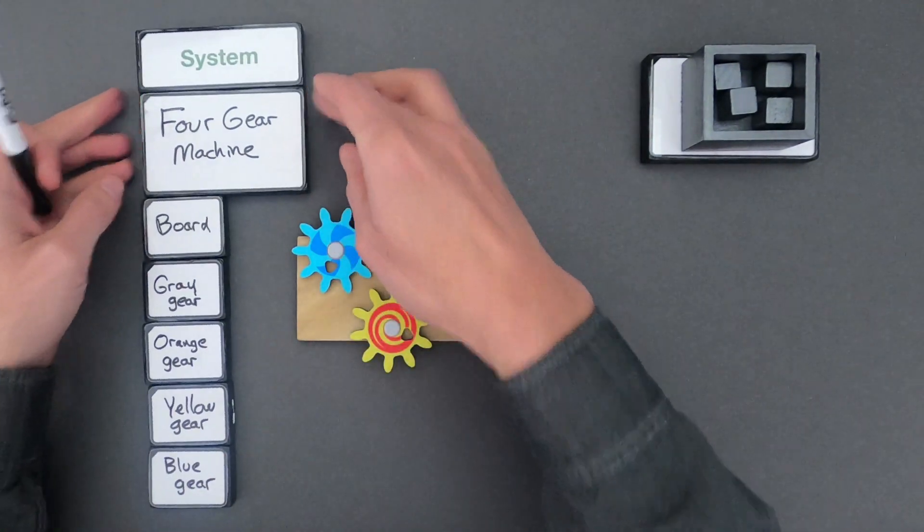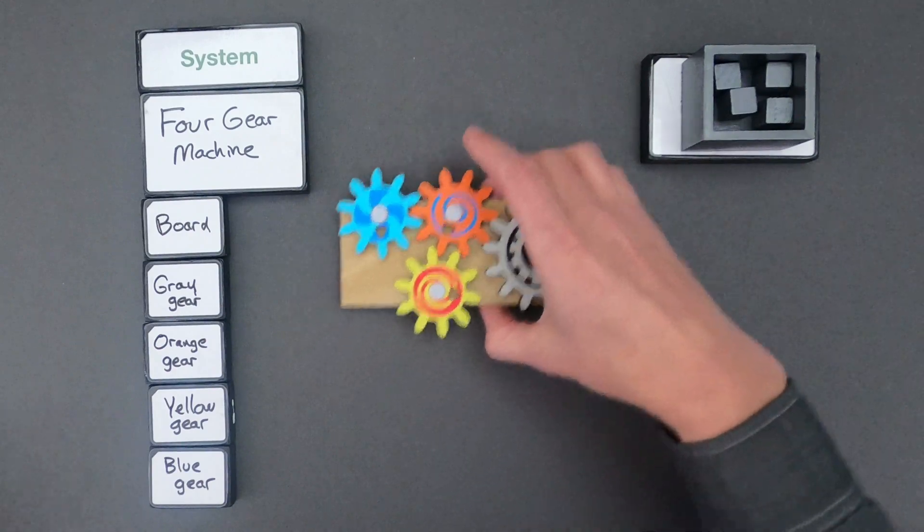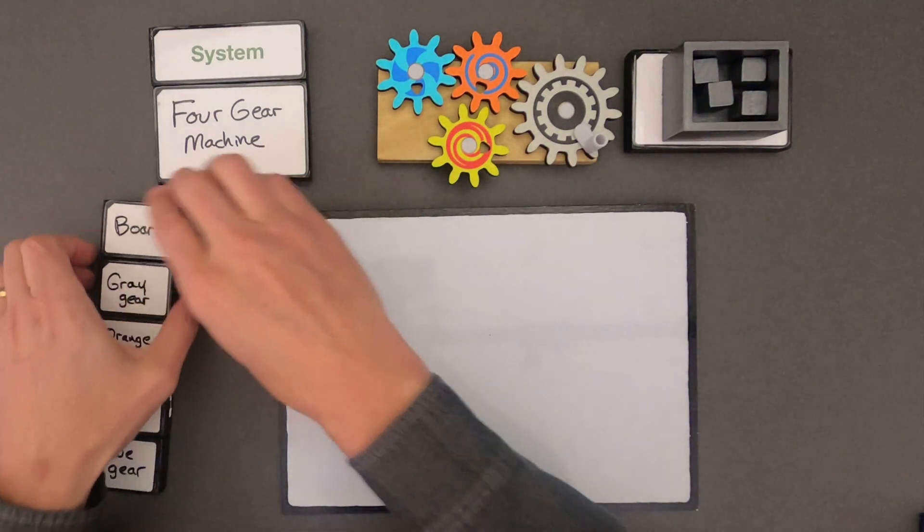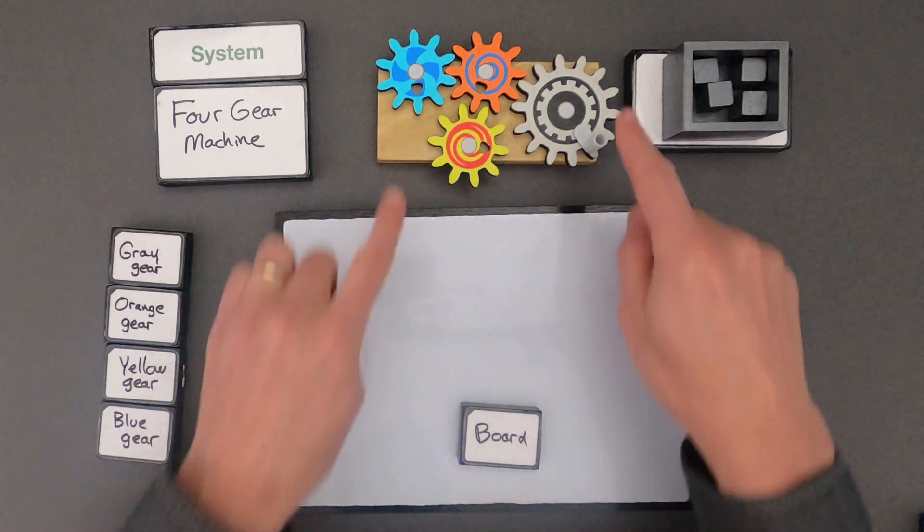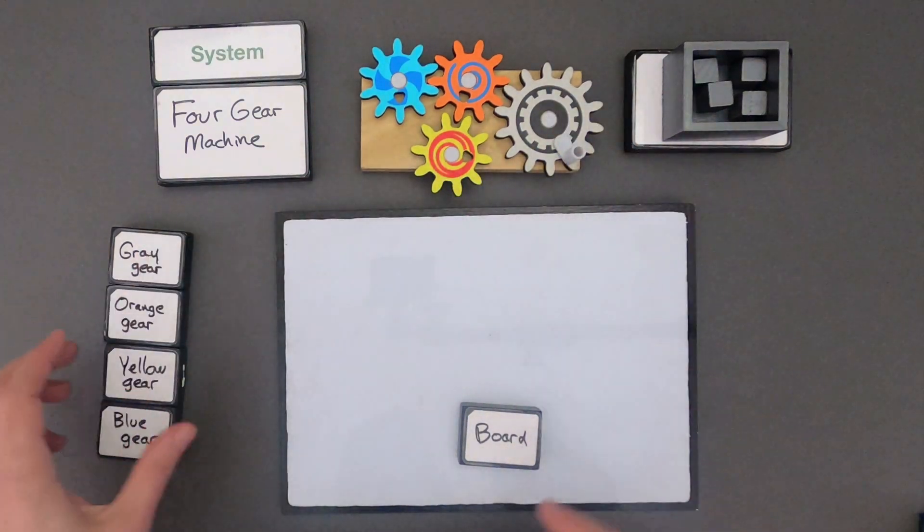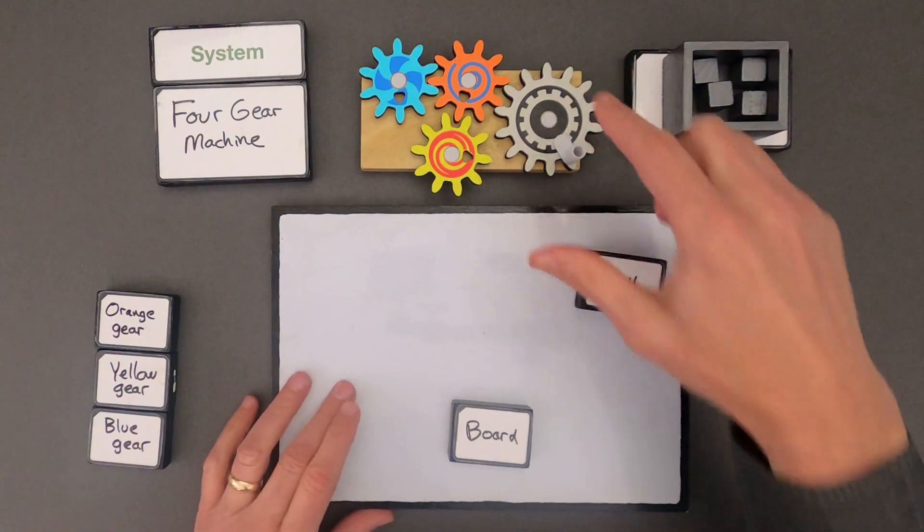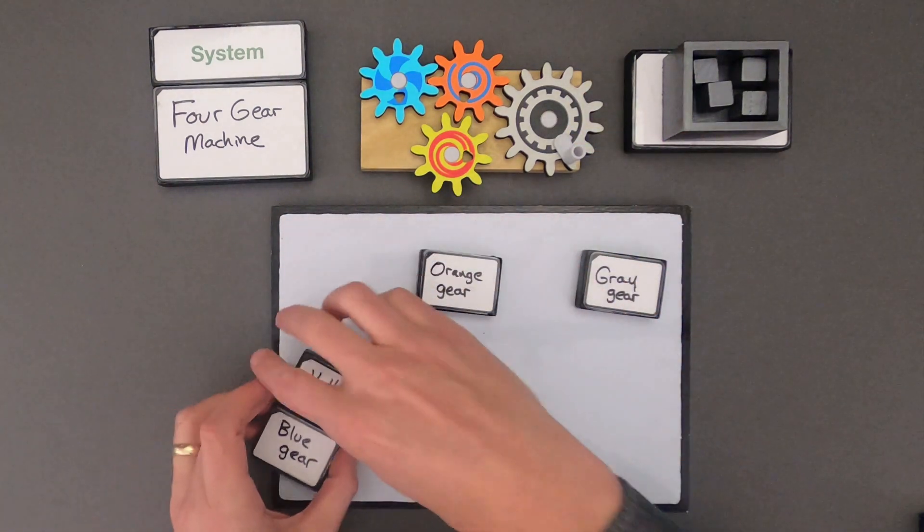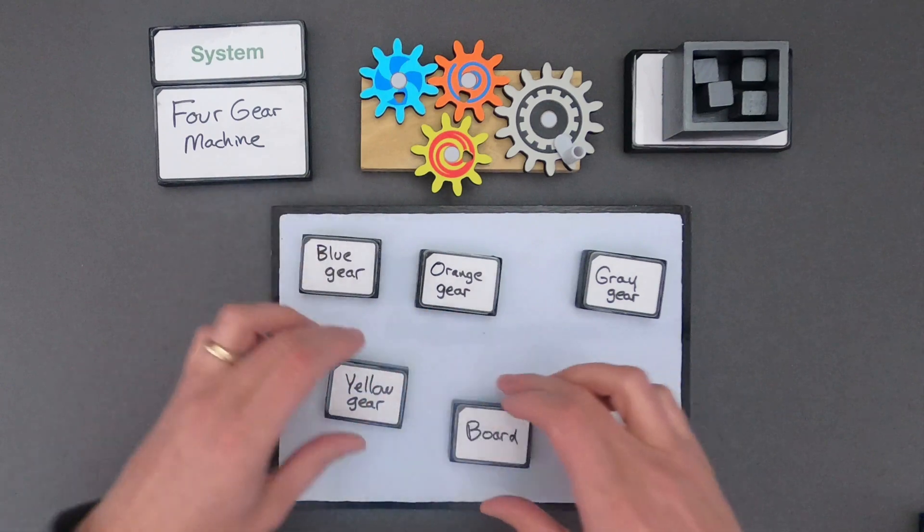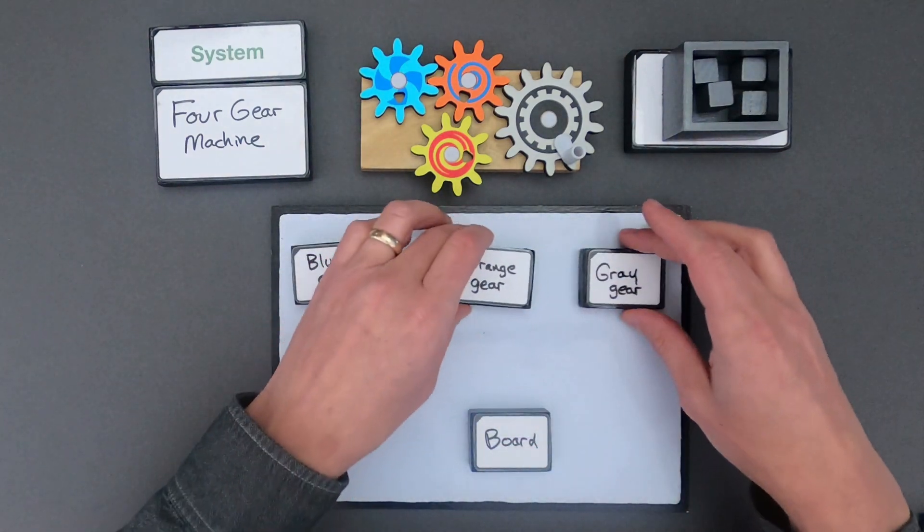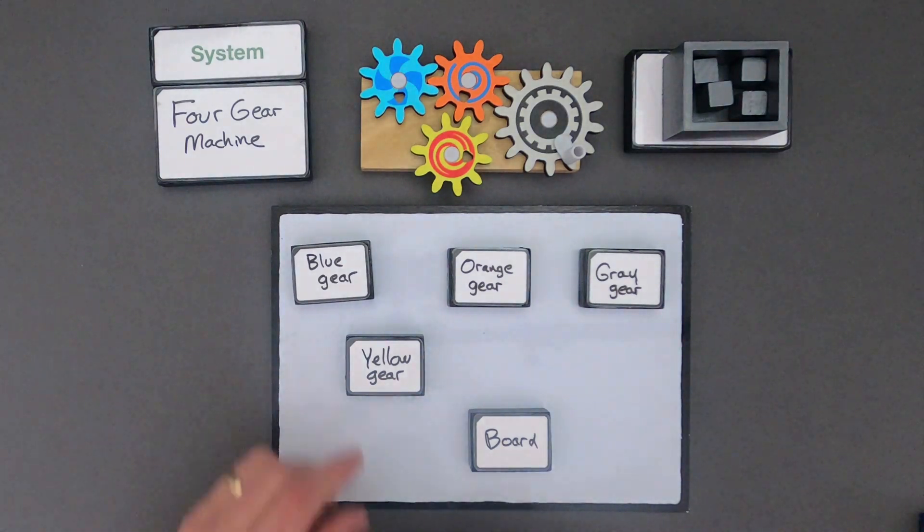So once you've defined all the parts of the system, you're halfway there. So now we have to figure out how do all those parts work together within the system. So this whiteboard represents the system. I would try to organize all the parts almost like they are in the four-gear machine itself. So the board is kind of on the bottom. I've got the gray gear on the right side, and then it goes to the orange gear, the blue gear, and the yellow gear. So now that I've got them organized in the system, I want to show how all of these work together.